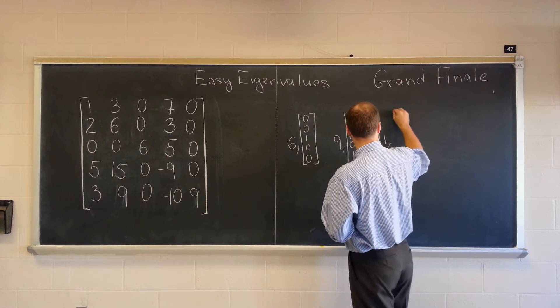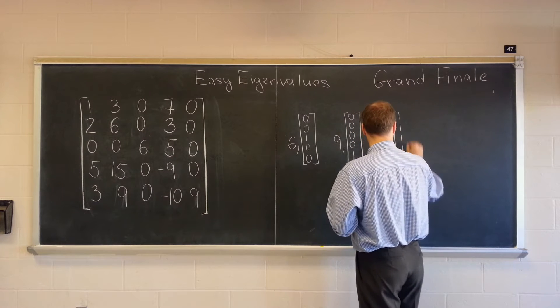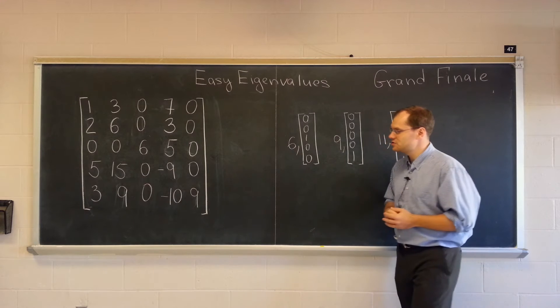Which means that 11 is an eigenvalue, and a vector of all 1's is the corresponding eigenvector. This was our eigenvalue feature number 2.